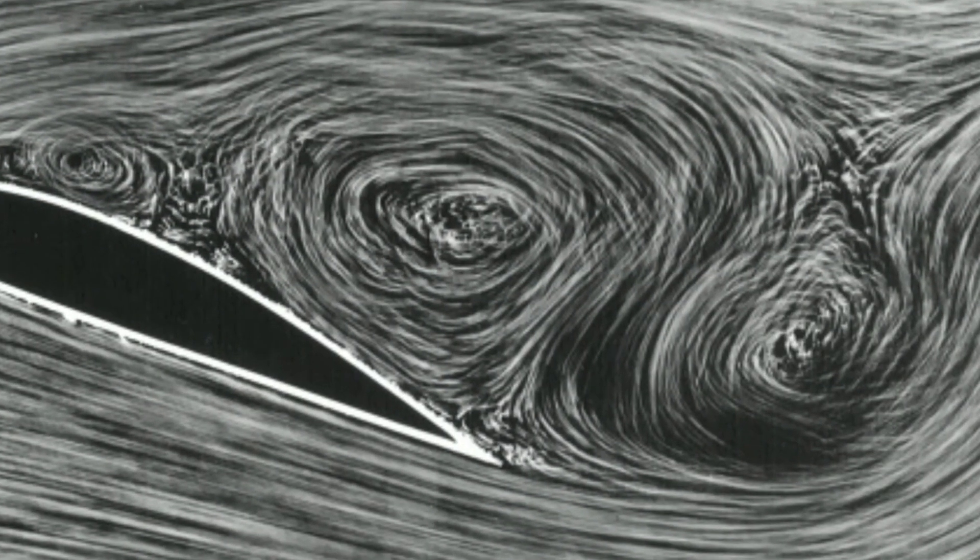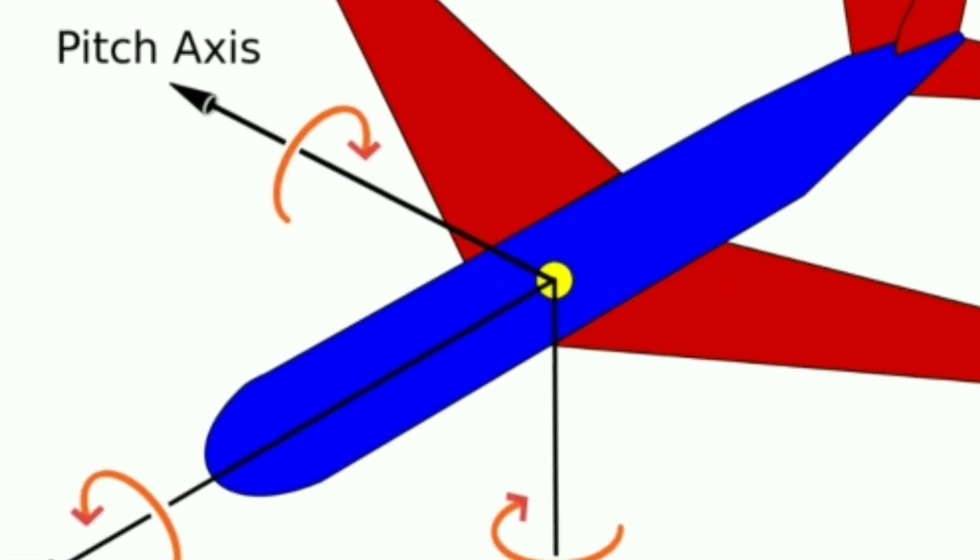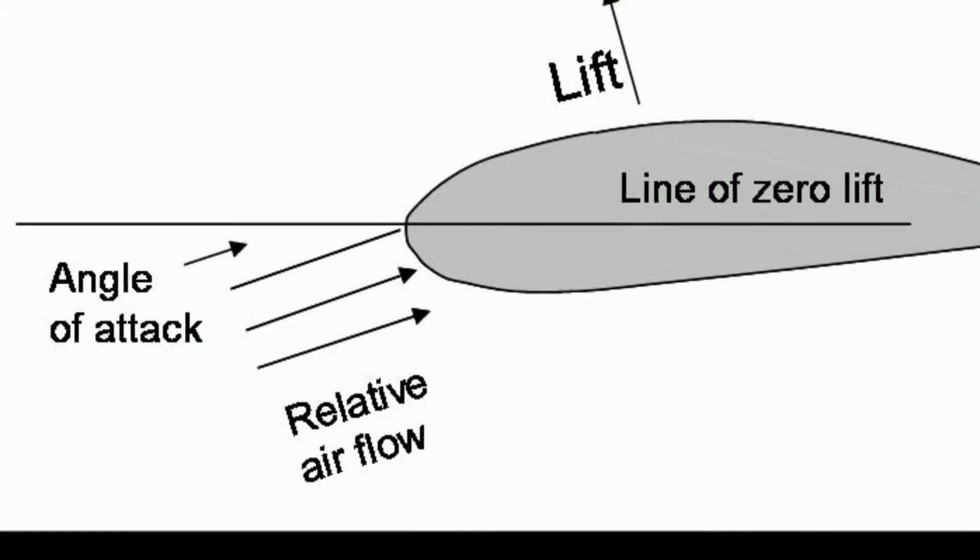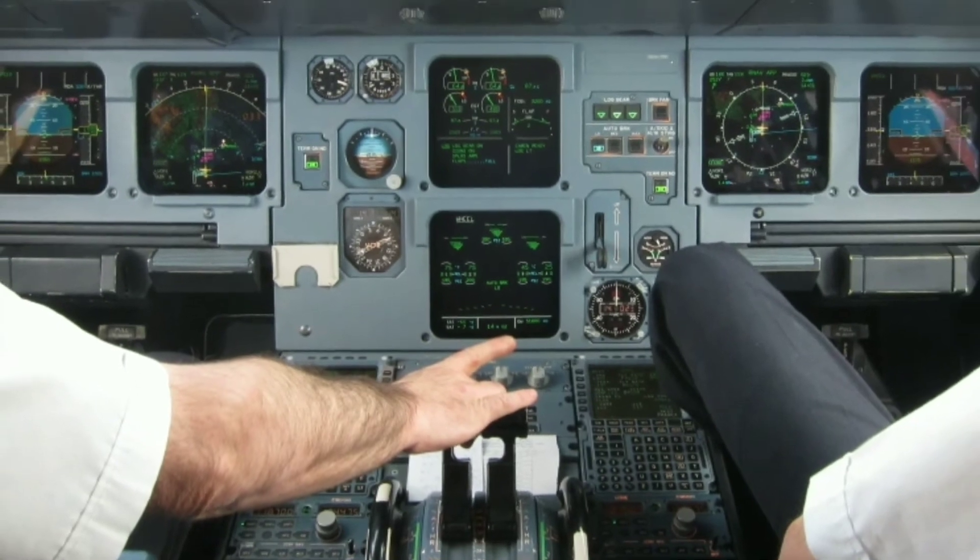In stall, wake of the wing is produced. To recover from stall, first thing pilot does is reduce the pitch angle of the aircraft. This reduces angle of attack of the wing. Once angle of attack is reduced sufficiently, pilot increases the engine thrust to increase aircraft speed.